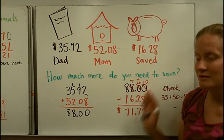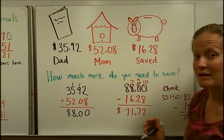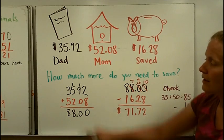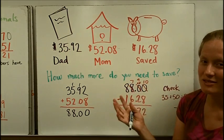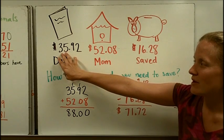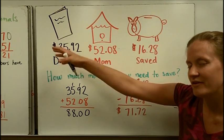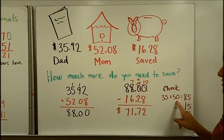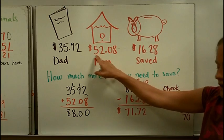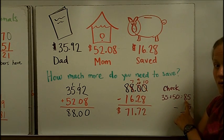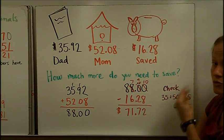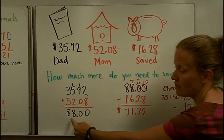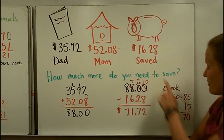When you do a multi-step problem like this, you should go back and double check that your answer was reasonable. I rounded this to a number that was easy to work with. This is close to $35, an easy number to work with. This was about $50. I rounded that to $50. When I added, it made an easy number of $85. That's close to what we got here that we needed to save.